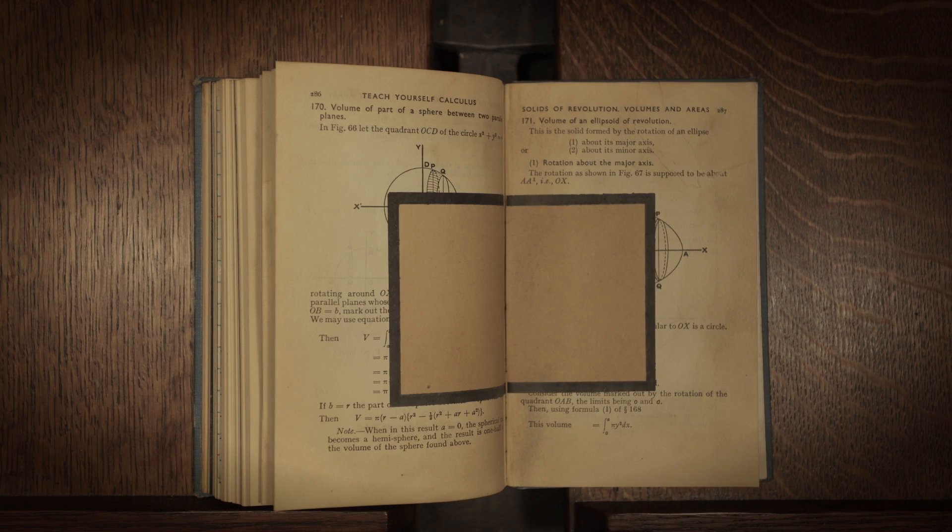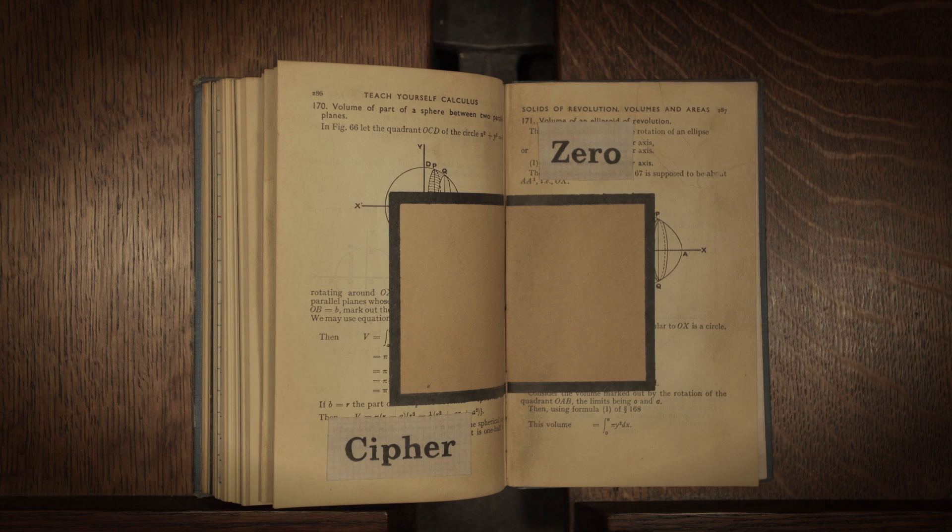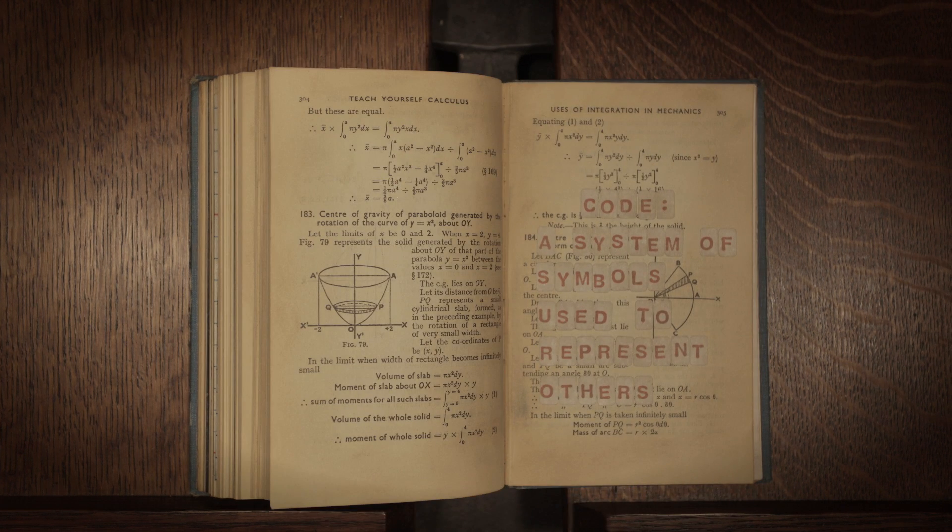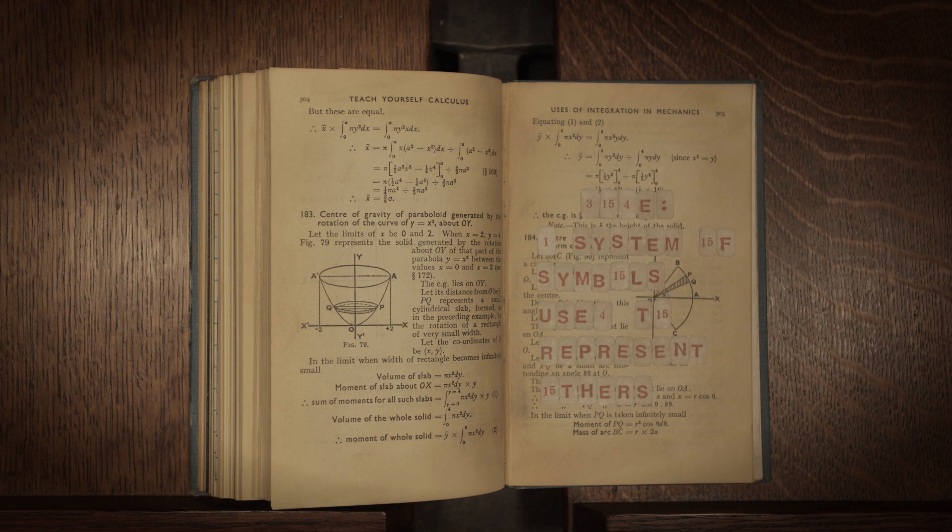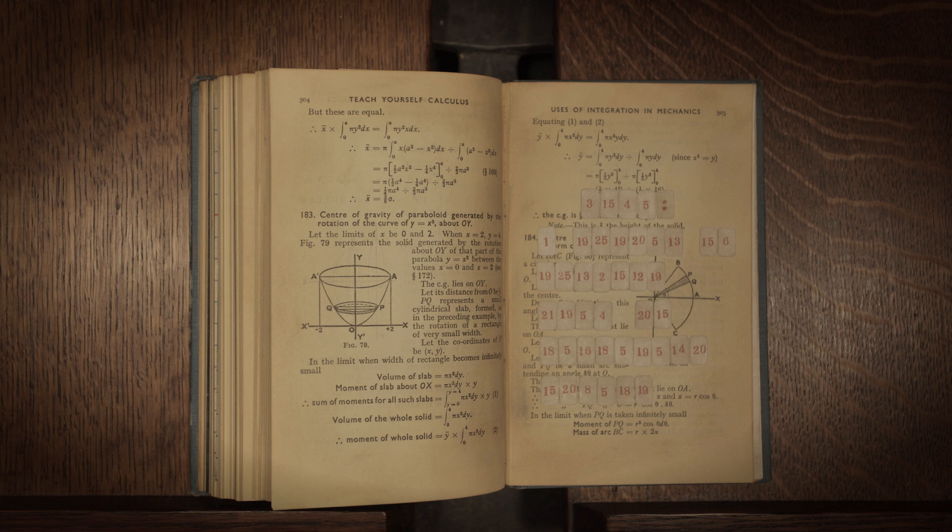Originally sharing the meaning empty with zero, cipher later came to describe a code, as early codes often used complicated substitutions between letters and numbers.